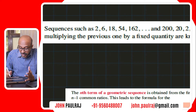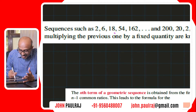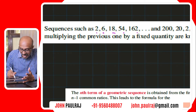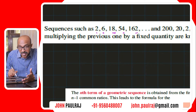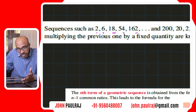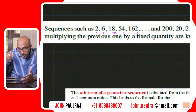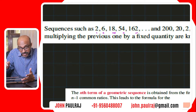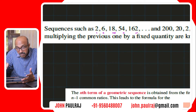When we look at a sequence of numbers like 2, 6, 18, 54, 162, it's very clear that 2 times 3 is 6, 6 times 3 is 18, 18 times 3 is 54, and 54 times 3 is 162. That means each successive term is a multiple — a constant multiple — and in this case it's 3. So each successive term is a constant multiple of its previous term.